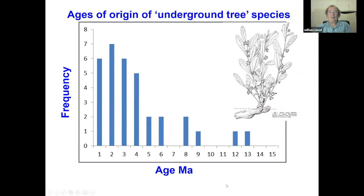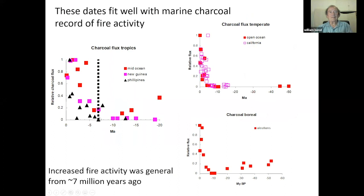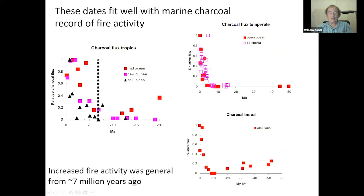Does this molecular phylogeny data have fossil evidence to support it? Yes — we have marine charcoal. Looking at charcoal near the tropics going back 20 million years, there has been a bit of fire around, but from around seven million years — more or less when our underground trees began — there is an absolute explosion of charcoal. The world began to burn. The same is true, even earlier, further north. This increased fire activity has been global from about seven million years ago.